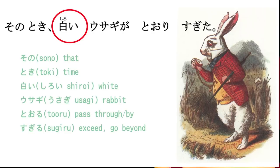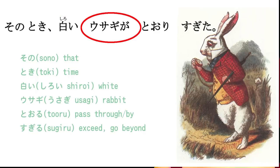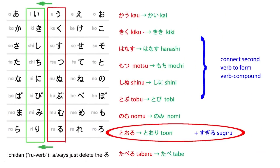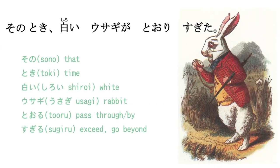Shiroi means white – it's an i-adjective. Usagi means rabbit. And toori-sugiru is made up of two words: tooru means to pass through, and sugiru means to exceed or go beyond. So toori-sugiru connects those two words together and means passing by. A white rabbit passed by – sono toki, shiroi usagi, toori sugita, passed by.